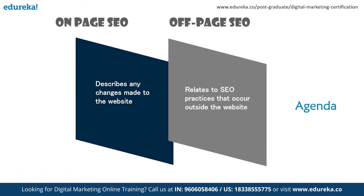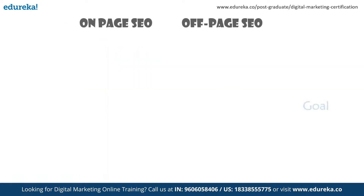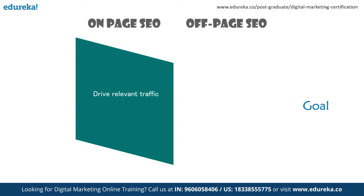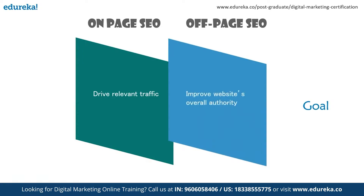The common goal for both is generating traffic and getting noticed on Google's search engine, but each technique has a different specific goal. On-page SEO mainly deals with driving relevant traffic to your website, making it easier for visitors and search engines to understand the nature and structure of your content. Off-page SEO, on the other hand, is designed to improve the overall authority of your website and help build your reputation as a valuable resource to other users.